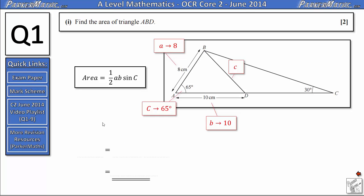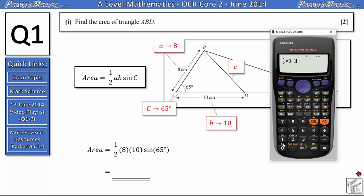Notice that to use this formula here we need the angle to be in between the two sides that we know. All we need to do now is substitute the numbers into the formula so we get the area of the triangle is given by 1/2 multiplied by 8 times 10 sin 65 degrees. And that gives us 36.3 if we round to three significant figures.